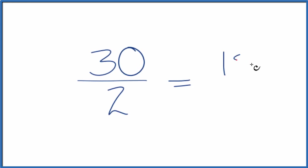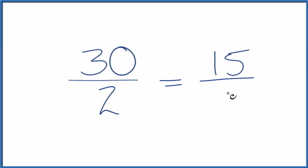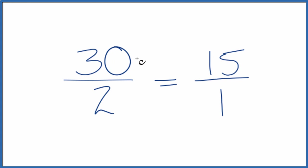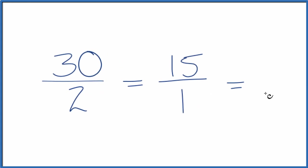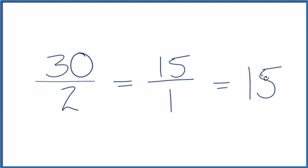30 divided by 2 is 15, and 2 divided by 2 is 1. So we've simplified 30 over 2 down to 15 over 1. And 15 divided by 1, that's just 15. So we can just write this as the whole number 15.